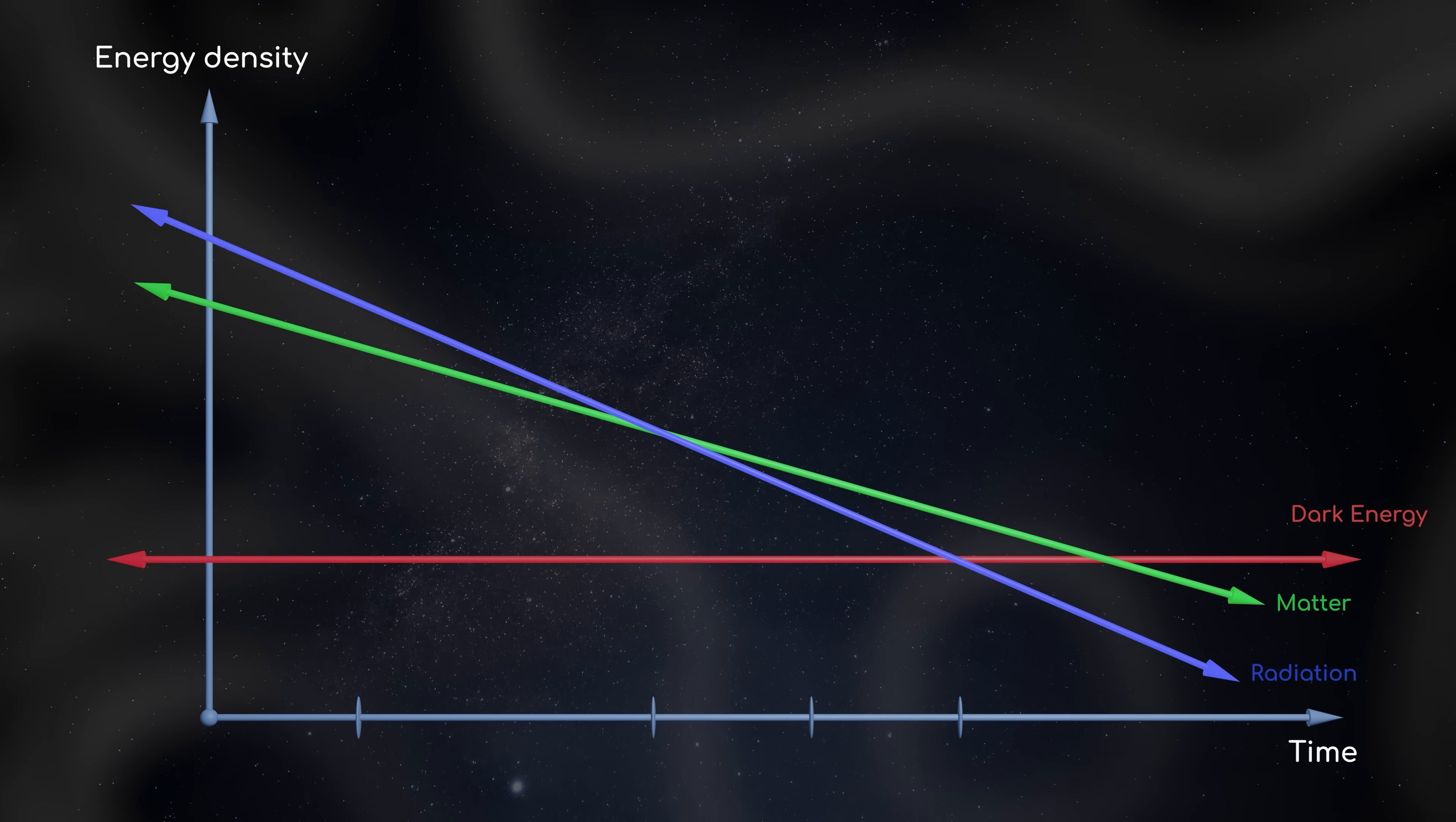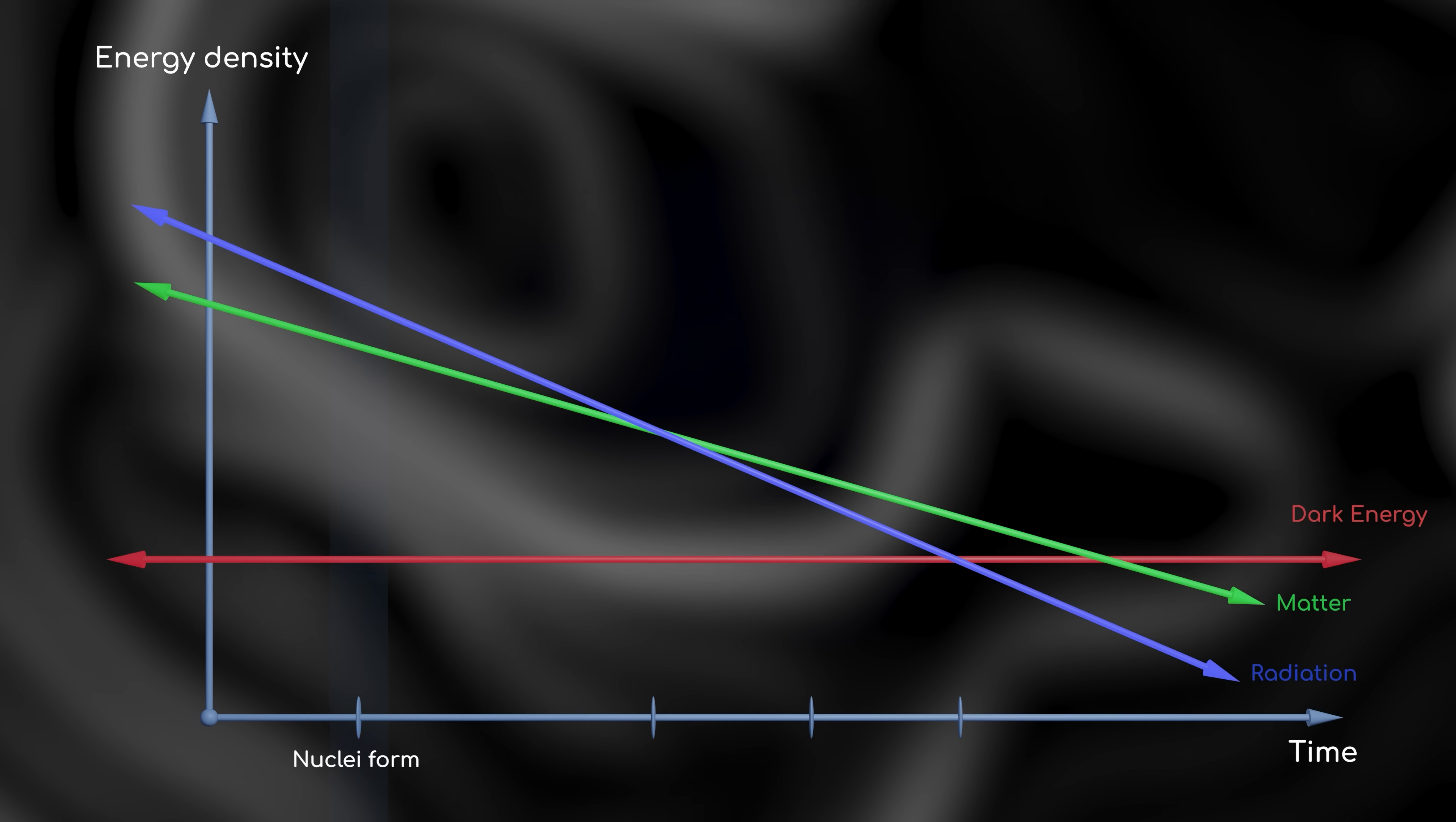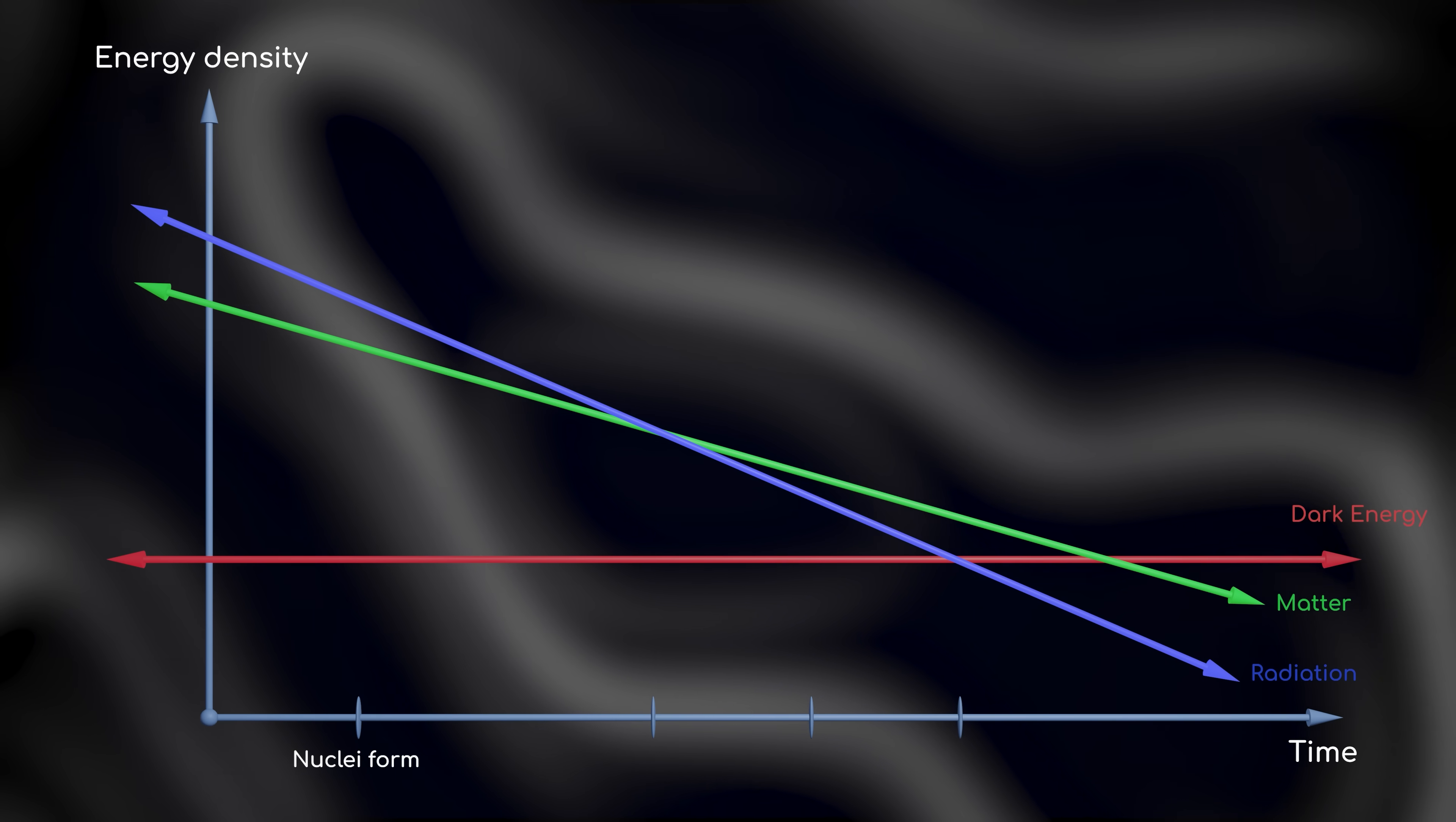Towards the beginning of time, for a very short period, there were no atoms. Very quickly though, protons and neutrons fused together to create the first atomic nuclei in the very early universe.